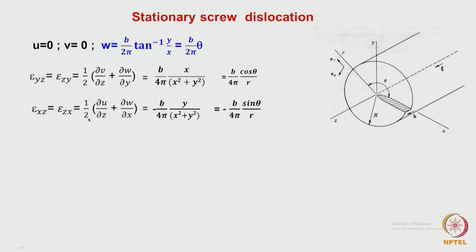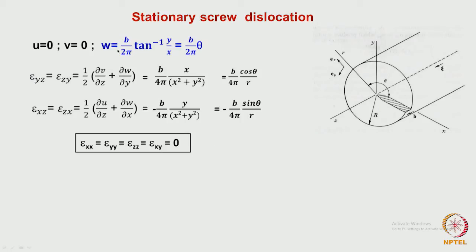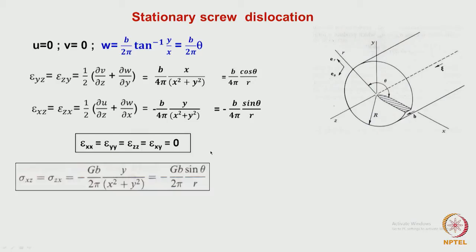Similarly, we can find epsilon_xz. All other components of the strain tensor — epsilon_xx, epsilon_yy — will turn out to be zero because only w exists. Only the terms that contain w differentiated with respect to x and y exist for the strain. These are all shear stresses — there are no tensile or compressive stresses around a screw dislocation; only shear stresses are present. This is something one should always remember.